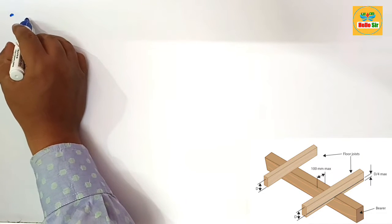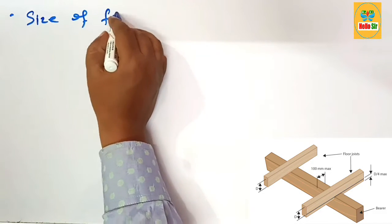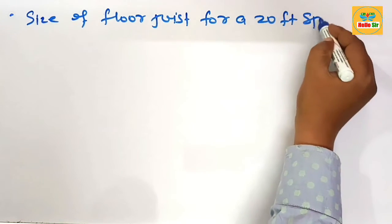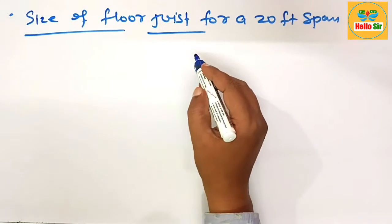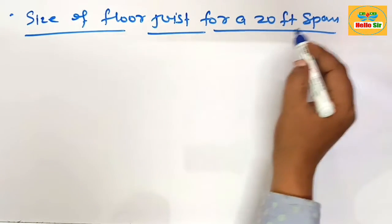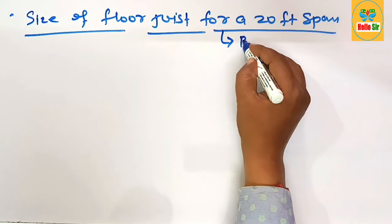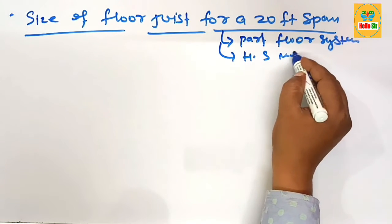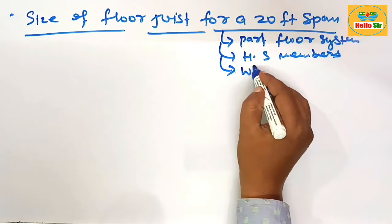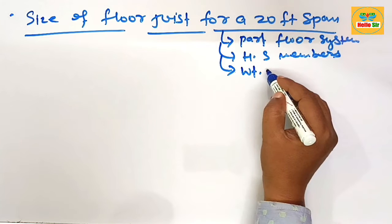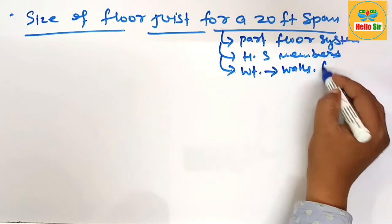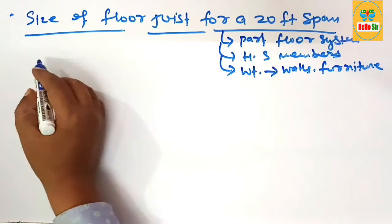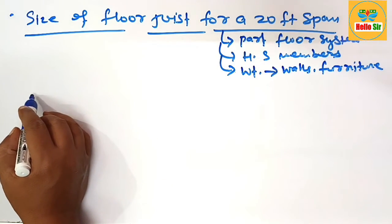In this video, we look at what size of floor joist is needed for a 20-foot span. The floor joist is a part of the floor system — it is a horizontal structural member that carries the weight of everything inside the room, like the weight of walls, furniture, different appliances, and the weight of people.